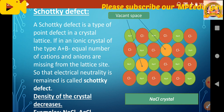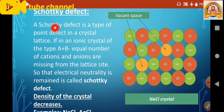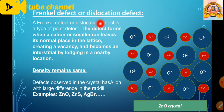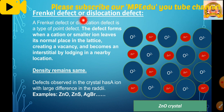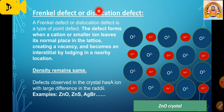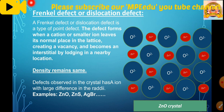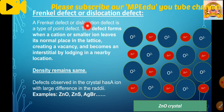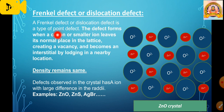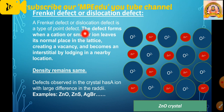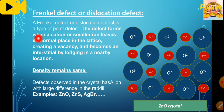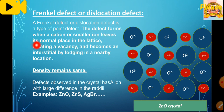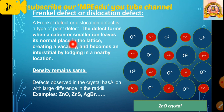Examples of Schottky defect are sodium chloride (NaCl), silver chloride (AgCl), and silver bromide (AgBr). In all these cases, the size of the cation and anion are nearly the same — the difference in ionic radii is very small. In such ionic crystals with similar cation and anion sizes, we observe Schottky defect. This defect was explained by the scientist Schottky, hence the name.